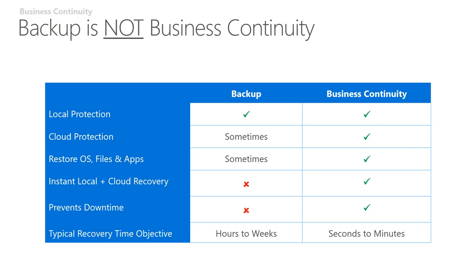A business continuity solution is going to help you accomplish all of those things. It's going to back up your files locally, synchronize them to the cloud, be image-level so you can restore everything in one step, and give you what's called instant local and cloud recovery. If my server dies and I realize I can't get it up and running quickly, do I have the ability to take one of those images and create a virtual copy of that server that I can give users access to and run? Then I can fix the hardware at a more convenient time, picking a time on the weekend or after hours to restore back to the physical hardware. A good business continuity solution is going to limit your recovery time from hours or weeks down to seconds or minutes.